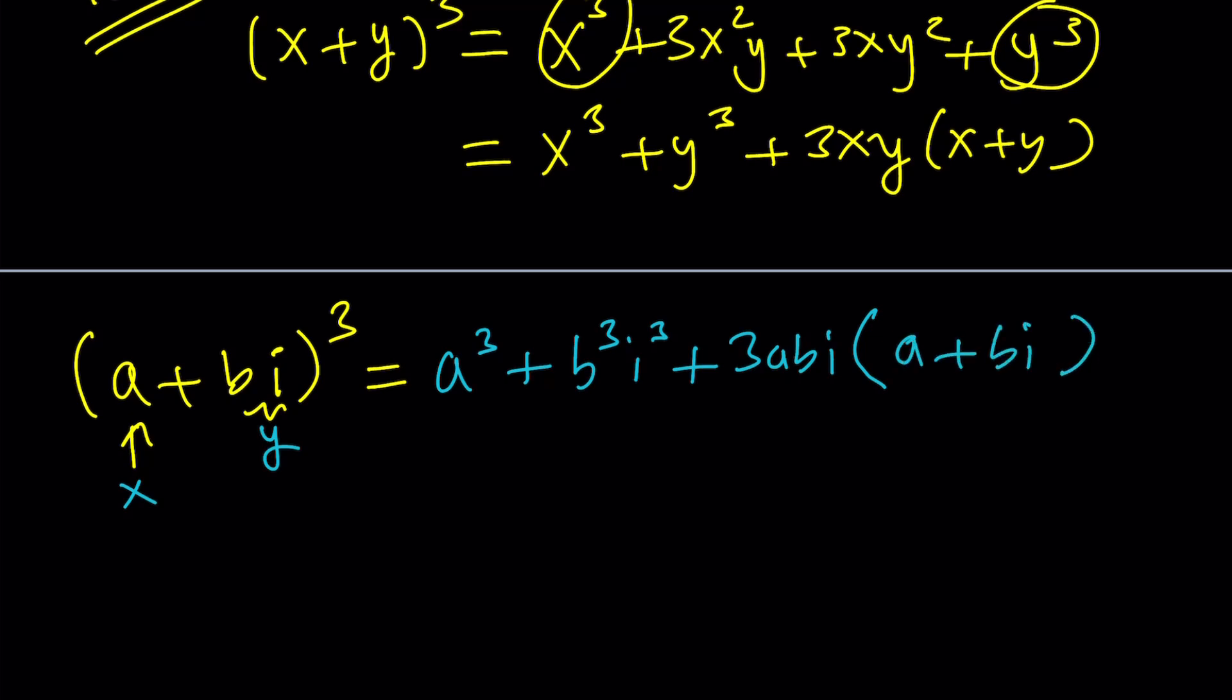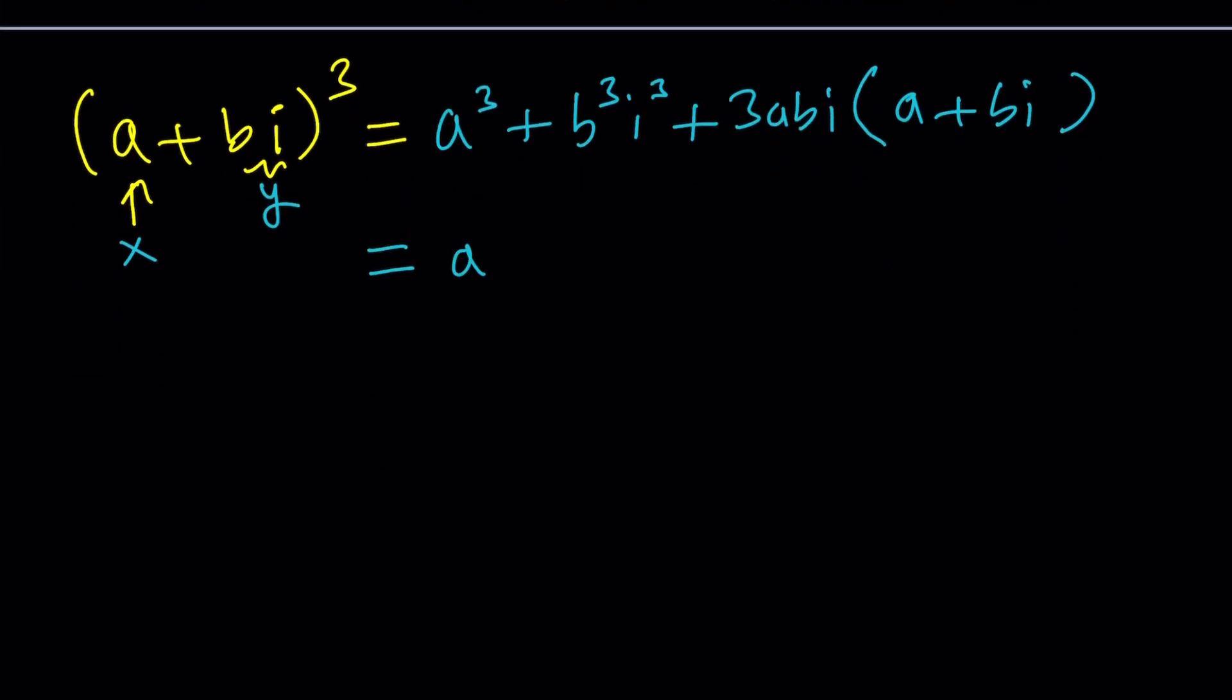3xy times x plus y, which is the original expression inside the parentheses, which is a plus bi. This is a little better than the other one because you don't have to square it, but you have to cube. a cubed. Now, remember, i cubed equals negative i because i squared equals negative 1.